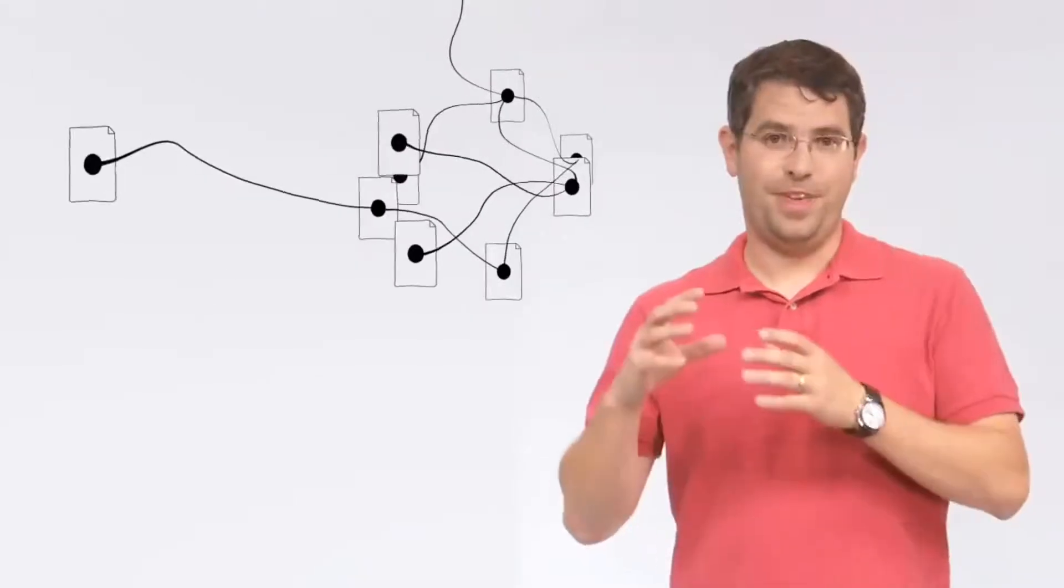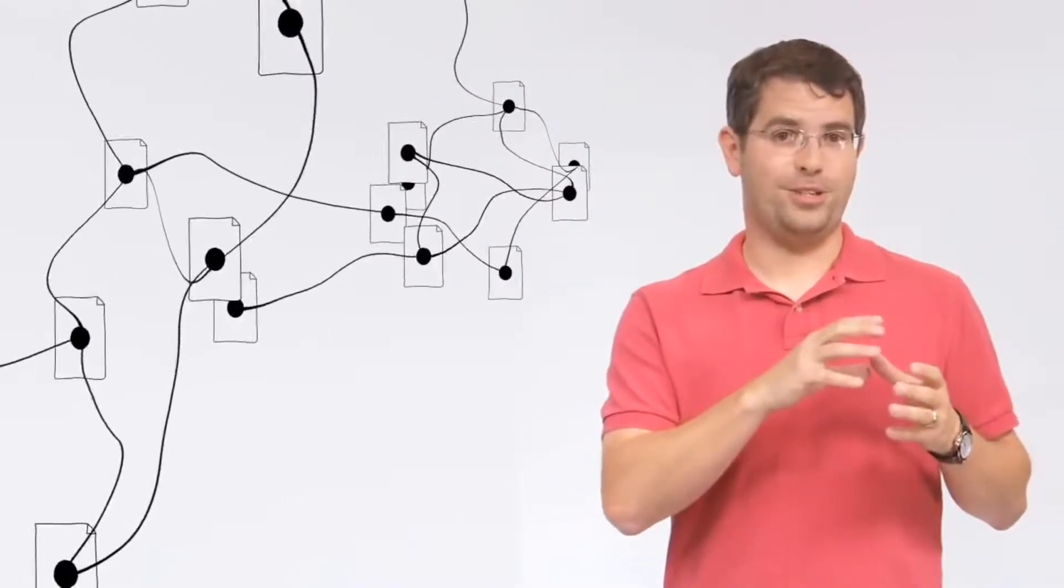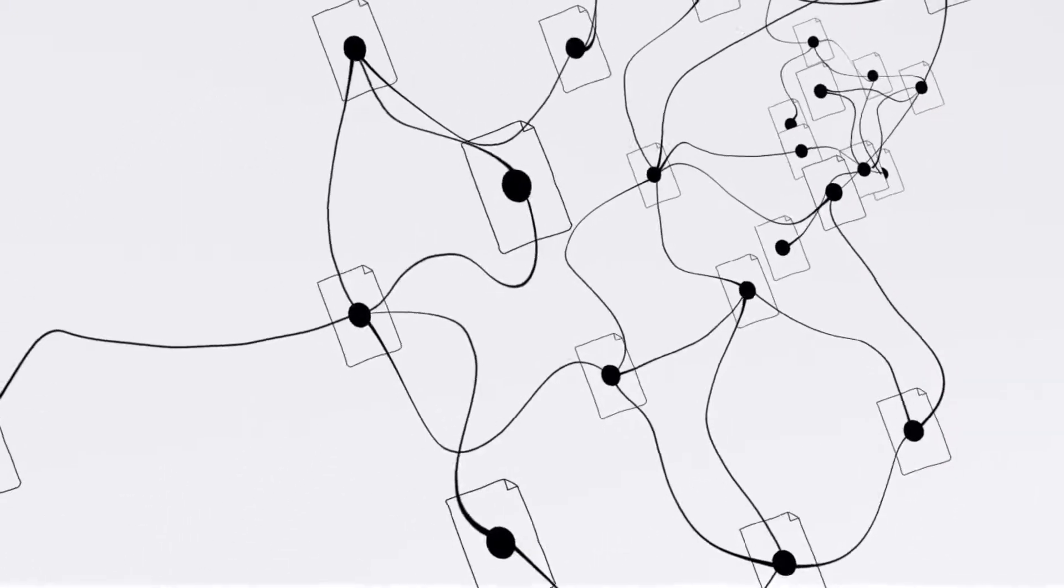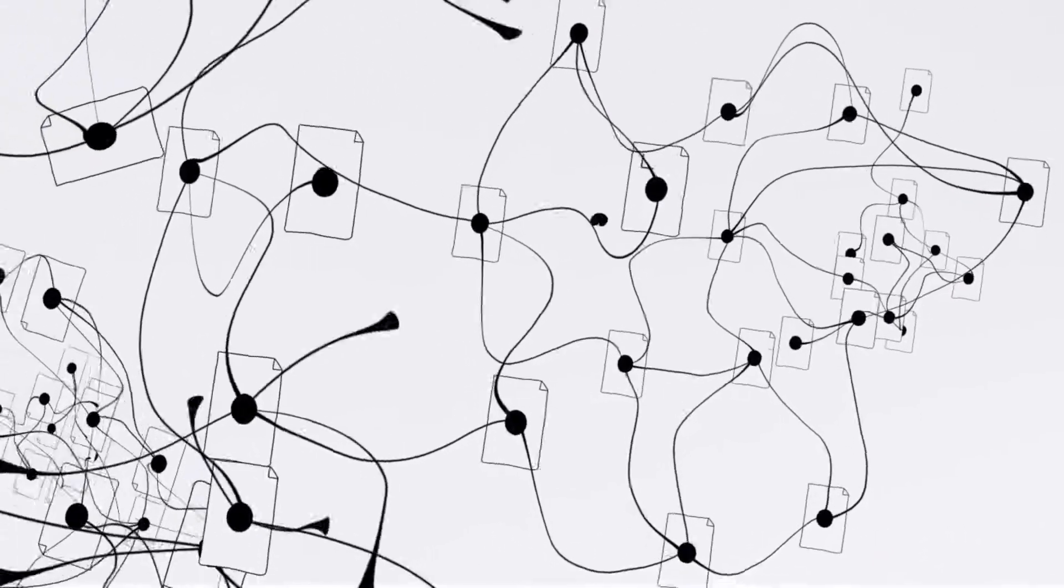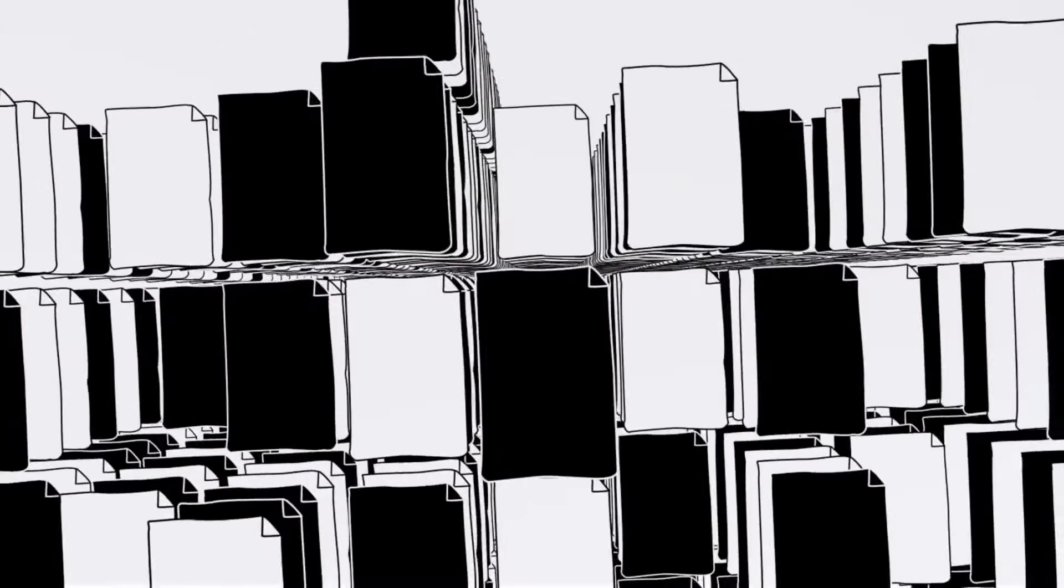We do this with software programs called spiders. Spiders start by fetching a few web pages, then they follow the links on those pages and fetch the pages they point to, and follow all the links on those pages, and fetch the pages they link to, and so on, until we've indexed a pretty big chunk of the web. Many billions of pages stored across thousands of machines.